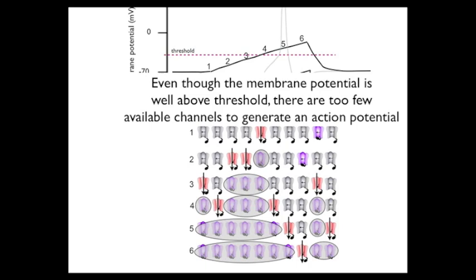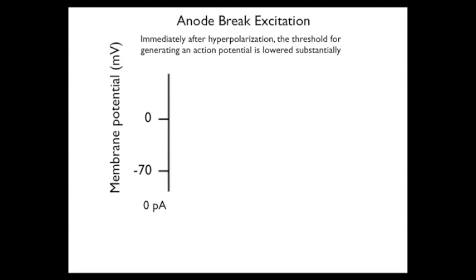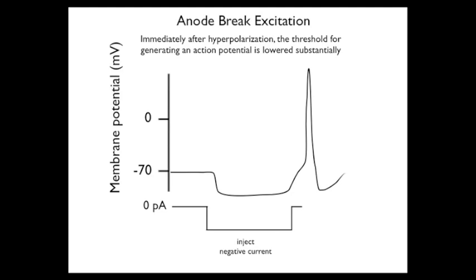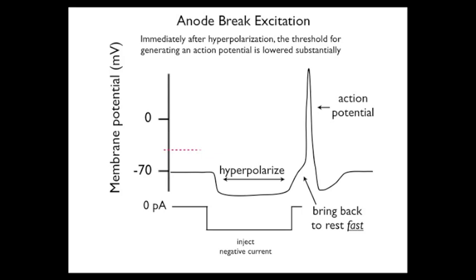Now we turn to anode break excitation — sort of the ying to the yang of depolarization block. Here, the threshold is lowered by a preceding hyperpolarization. What I'm going to show you is that you can take the cell from rest, hyperpolarize it, bring it back to rest, and generate an action potential. It starts off, then you hyperpolarize by injecting negative current, bring it back to rest, and you get an action potential. The important feature is that the membrane potential is brought back to rest very quickly. Also notice that the normal threshold is considerably higher than the new, lower threshold created by the preceding hyperpolarization.